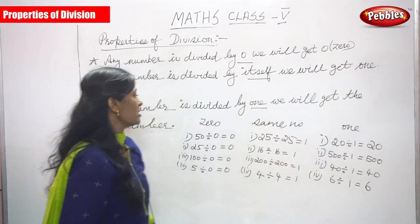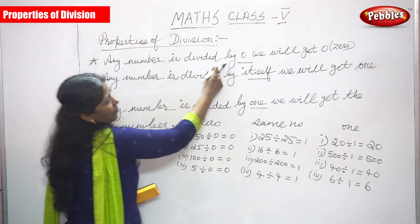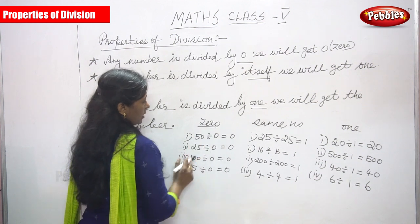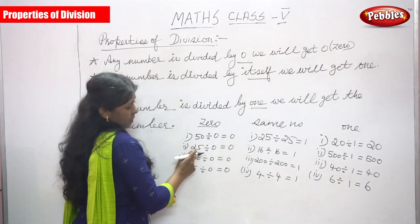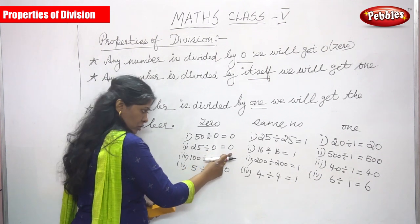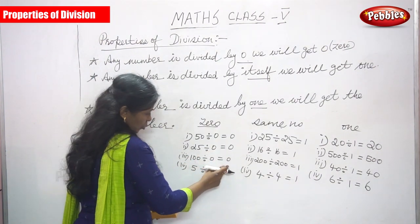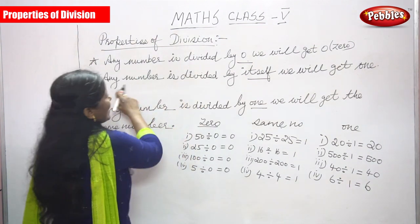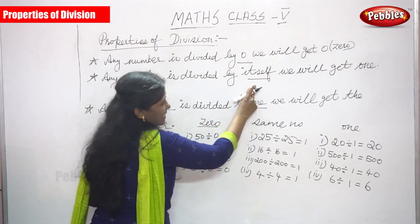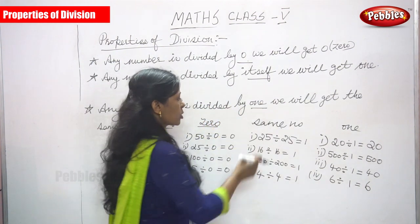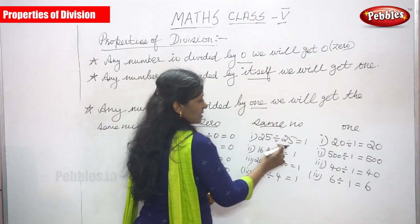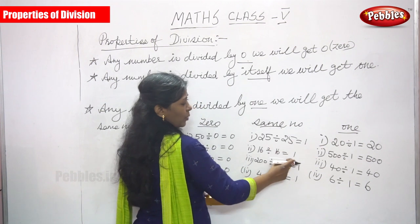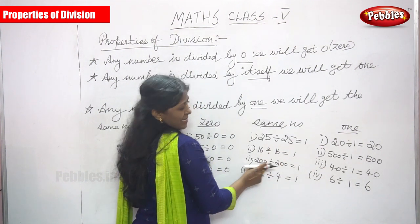I'll repeat the properties once again. Any number divided by zero, we will get zero. So 50 divided by zero you get zero, 25 divided by zero you get zero, 100 divided by zero you get zero.